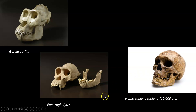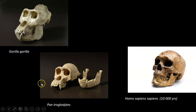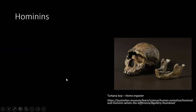Here we see some examples. There's us — that's a person from about 10,000 years ago. The chimpanzee, Pantroglodytes. And Gorilla gorilla — I love that that's the scientific name. And then we have the hominins.